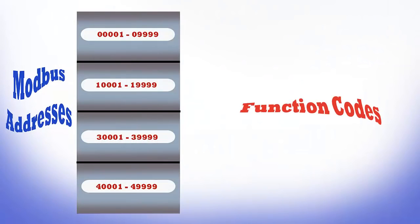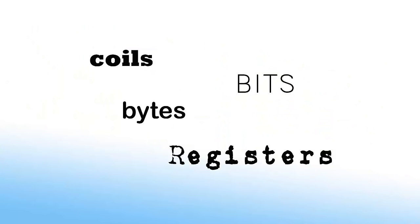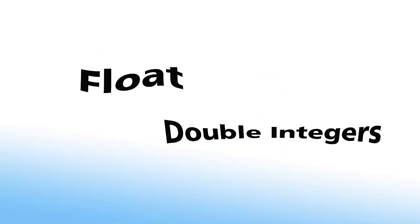We'll delve into Modbus data addressing and the associated function codes, and break down coils, bits, bytes, and registers. We'll also talk about float and double integer values and how they're handled by Modbus.